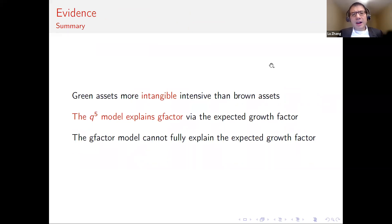All right, so let me give a summary of the evidence. I put together three pieces of evidence that seem to be pointing to a different causal structure behind the ESG investing. First of all, green assets seem to be more intangible intensive than brown assets. Second, the Q5 model explains the green factor mostly through the expected growth factor. On the other hand, the green factor model cannot fully capture the expected growth factor.